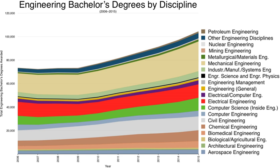In 2002, the Netherlands switched to the bachelor-master system as a consequence of the Bologna process, in which 29 European countries agreed to harmonize their higher education systems. In this system, professional schools award bachelor's degrees like BEng after four years' study, and universities award the bachelor's degree B.Sc. after three years. A university bachelor usually continues for one or two more years to earn a master's degree M.Sc. A vocational bachelor may be admitted to a university master's degree program, though often required to take additional courses.